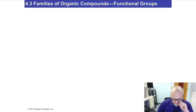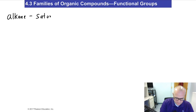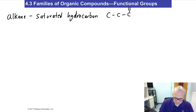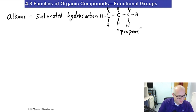Now let's discuss some common classes or families of organic molecules. Propane is a pretty good example of an alkane. Alkanes have carbon-to-carbon single bonds only.